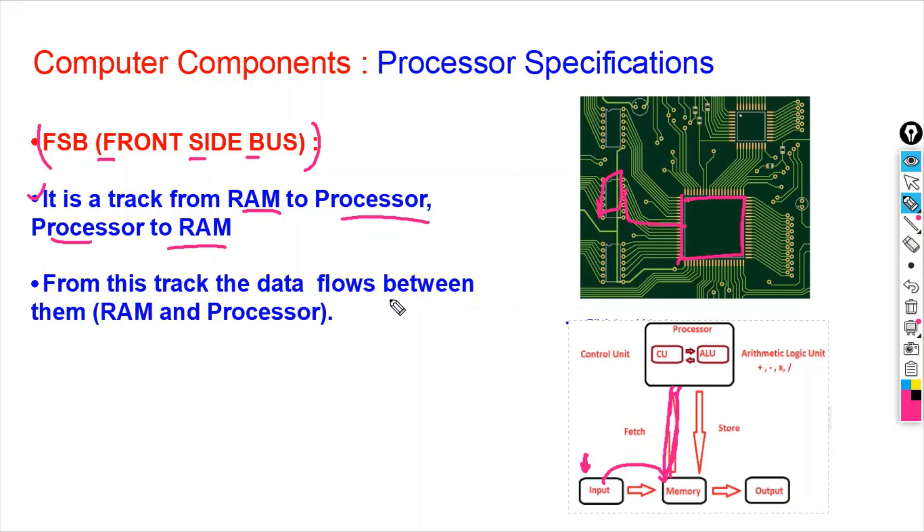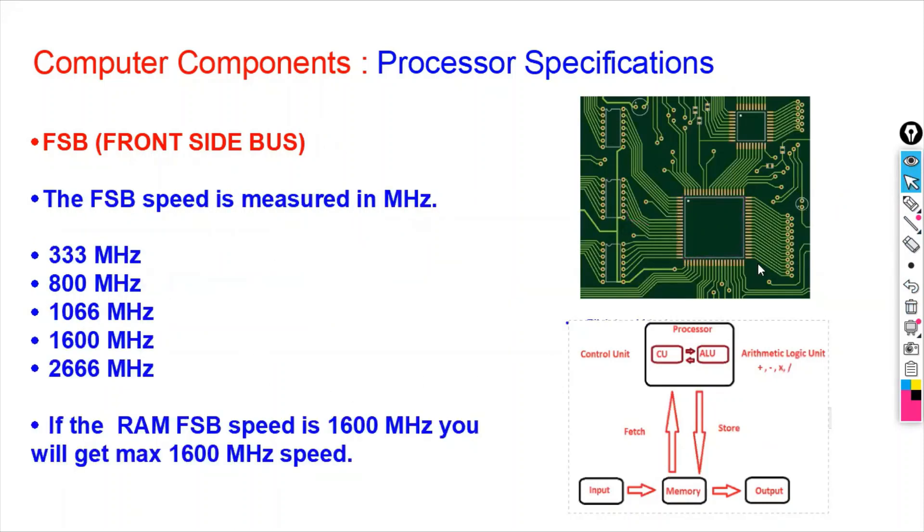So from this track, data flows between RAM and processor. So we need to check the speed of FSB. So FSB speed is measured in megahertz, and you will find the FSB speed like 333 megahertz, 800 megahertz, 1066 megahertz, 1600 megahertz.